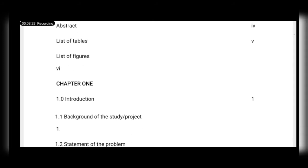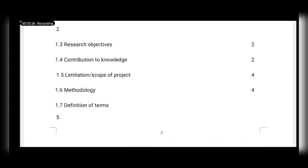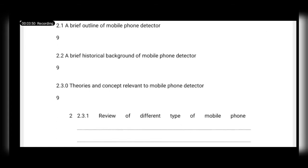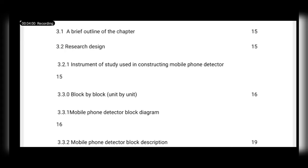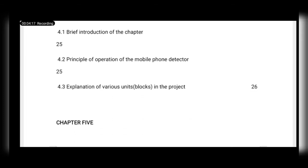The table of contents includes: title page, certification page, dedication page, and these are numbered serially. Chapter one has introduction, background of the study, statement of the problem, research objective, contribution to knowledge, limitation or scope, methodology, and definitions. Chapter two has literature review, a brief historical background of mobile phone detector, and theories and concepts. Each supervisor has his own way, so go ask your supervisor for his guidelines on how to write chapters one to six.